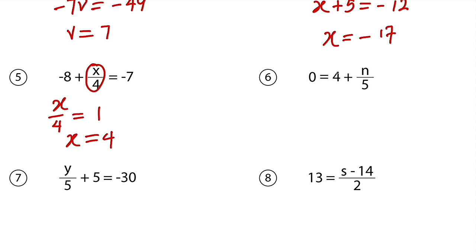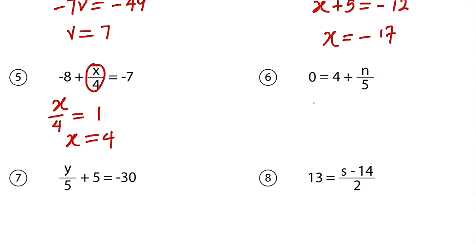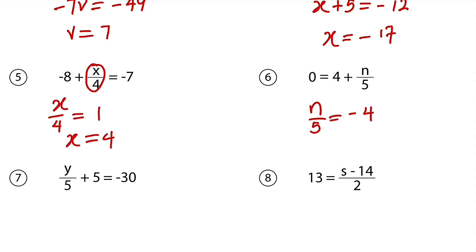Moving on. We have 4 plus a certain number, and the result is 0. It implies that this number right here must be negative 4, because 4 minus 4 is 0. Therefore, n divided by 5 must be negative 4. Next, what number can you divide by 5 to get negative 4? The number must be negative 20, because negative 20 divided by 5 is negative 4. Hence, n is equal to negative 20. And you can cross multiply because 5 times negative 4 is negative 20.